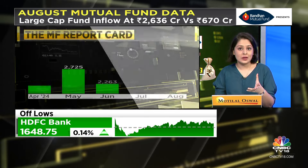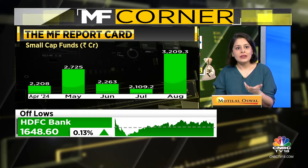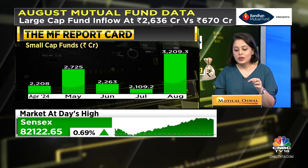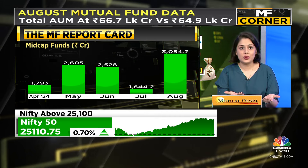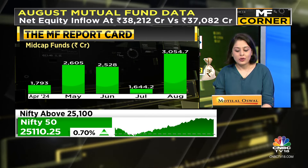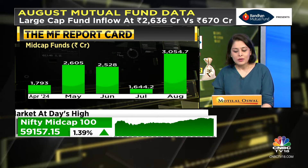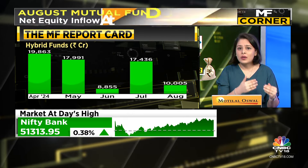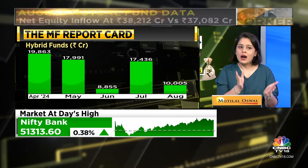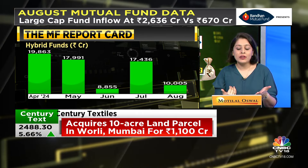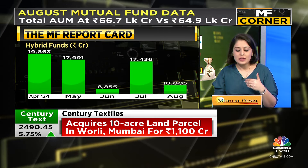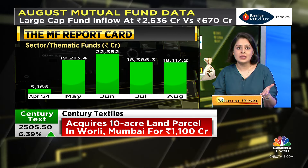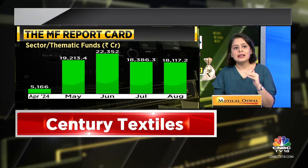Despite concerns about higher valuations in small and mid caps, both categories have done well. Small caps saw inflows increase to ₹3,209 crore — a multi-month high. Mid caps saw a doubling of inflows on a month-on-month basis, coming in at ₹3,054 crore compared to ₹1,644 crore previously. The hybrid category, which had done really well in the past couple of months when there were outflows in debt and large cap funds, picked up in July at ₹17,436 crore, but has now come off sharply to ₹10,500 crore.